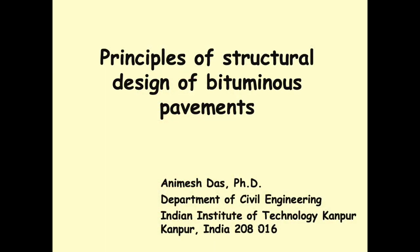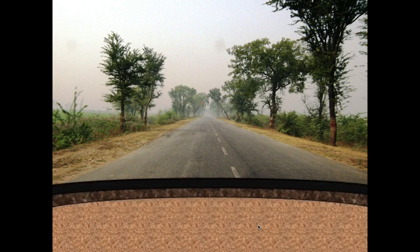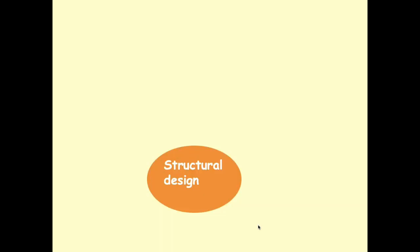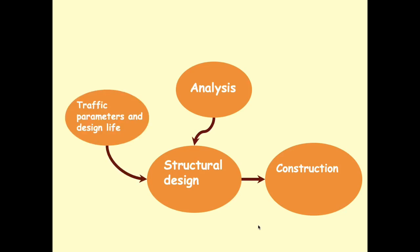Thank you for the introduction. I shall be speaking on principles of structural design of bituminous pavements. By structural design, in general terms, we mean estimation of the thicknesses. If there is a pavement, it is made up of multiple layers, so we need to know their thicknesses. Once structural design is done, we can refer it for construction purposes. For performing structural design, we need to do analysis of the pavement structure, and we also need to know the traffic parameters and the design life, as well as the material parameters used for analysis.